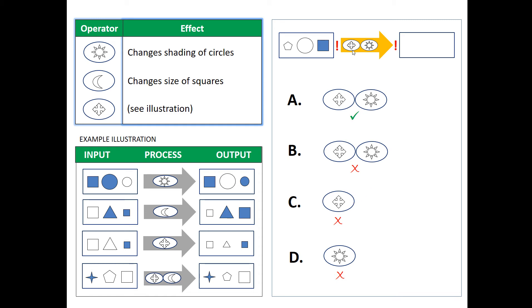So note that we said earlier that the quad arrow changes the size of unshaded shapes. So in this case, that would be pentagon and circle.